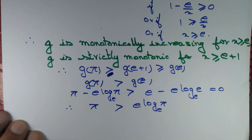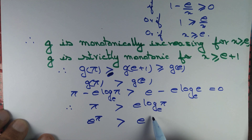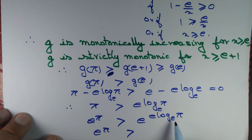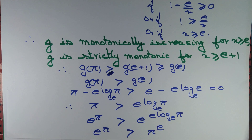Since exponentials are monotonically increasing and pi is greater than e times log pi, we conclude that e to the power pi is greater than e to the power (e times log pi). By the property of logarithms, e to the power (e times log pi) equals pi to the power e. Therefore, e to the power pi is greater than pi to the power e, and we are done.